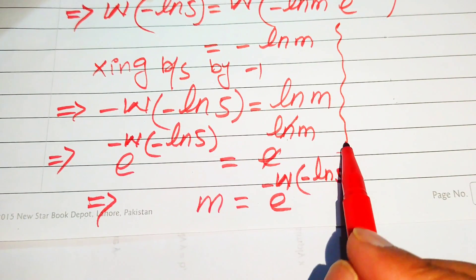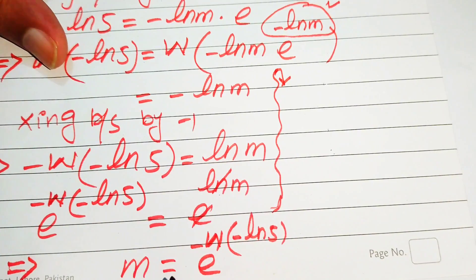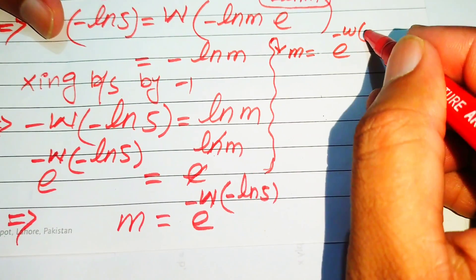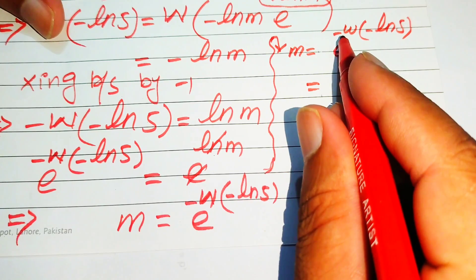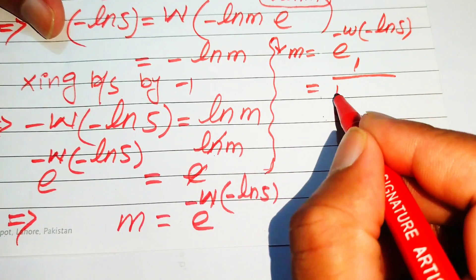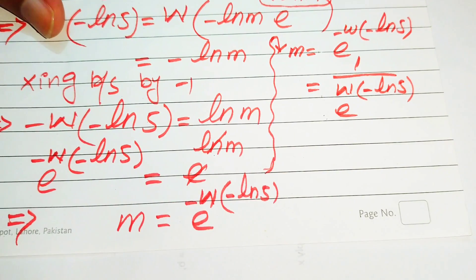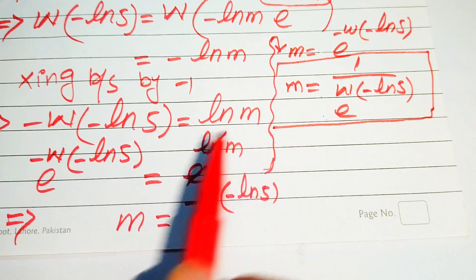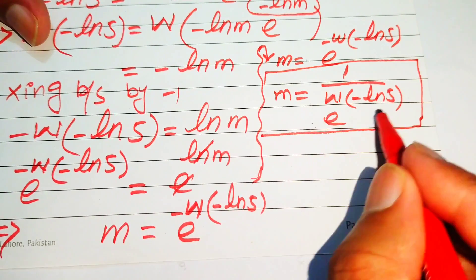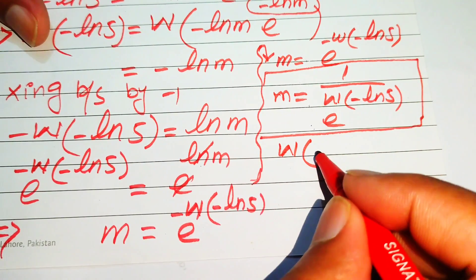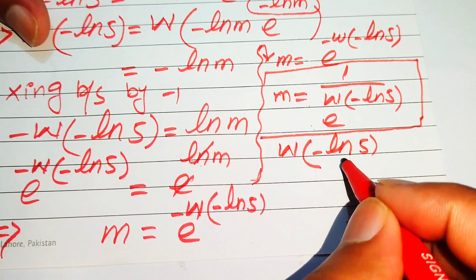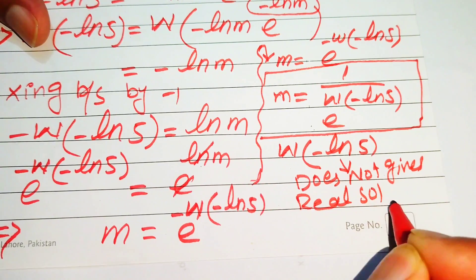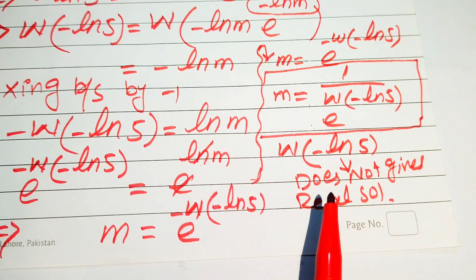We write this term out clearly. The value of m equals e to the power of minus W(minus log 5). When we move the negative exponent, it becomes m equals 1 over e to the power of W(minus log 5). Looking at this final answer, the exponent of e is W(minus log 5), and this expression does not give a real solution — this Lambert W function does not give us a real solution.